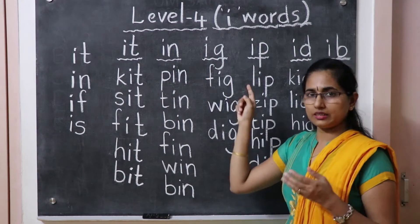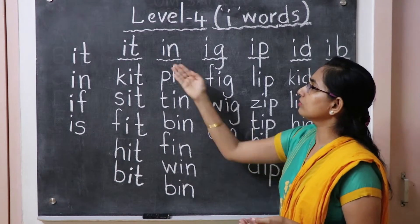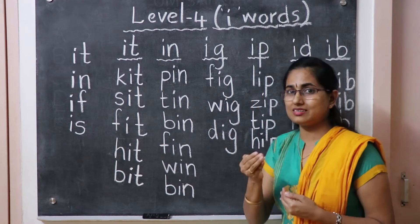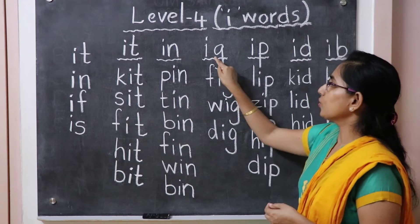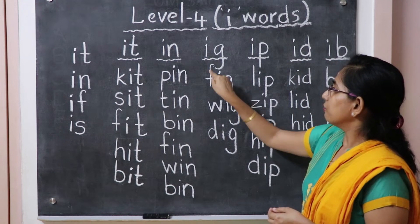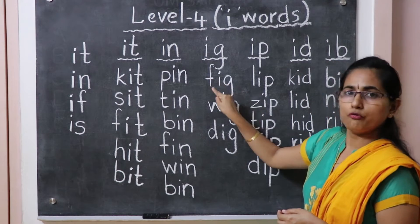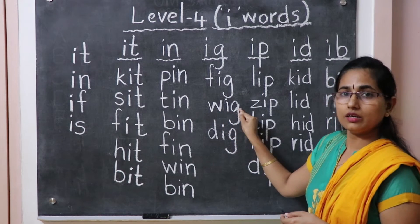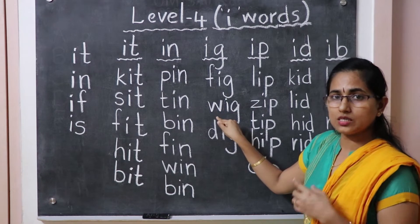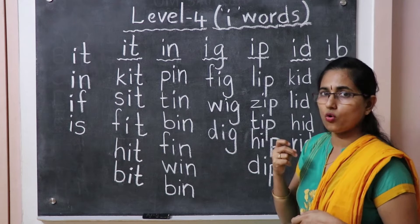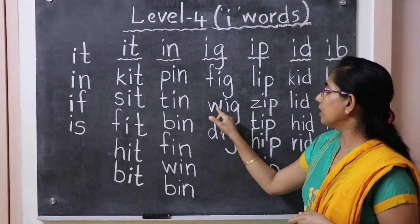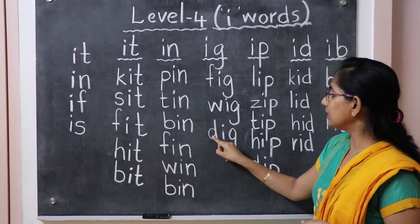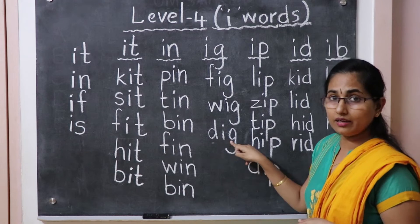Each word can be separated and sounded out individually — it is easy that way. Now -ig words: F-ig: fig. V-ig: vig. D-ig: dig.